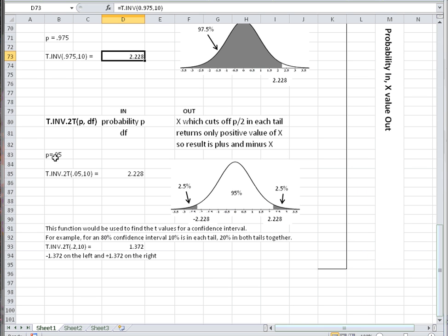For example, if we want 5% total in the tails, 2.5% in each tail, we would need to use 2.228 and minus 2.228. This is the function that's usually used to find the t values for a given confidence interval.